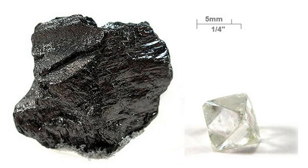There are three types of natural graphite: amorphous, flake or crystalline flake, and vein or lump. Amorphous graphite is the lowest quality and most abundant. Contrary to science, in industry, "amorphous" refers to very small crystal size rather than complete lack of crystal structure. Amorphous graphite is used for lower value graphite products and is the lowest priced graphite. Large amorphous graphite deposits are found in China, Europe, Mexico and the United States.